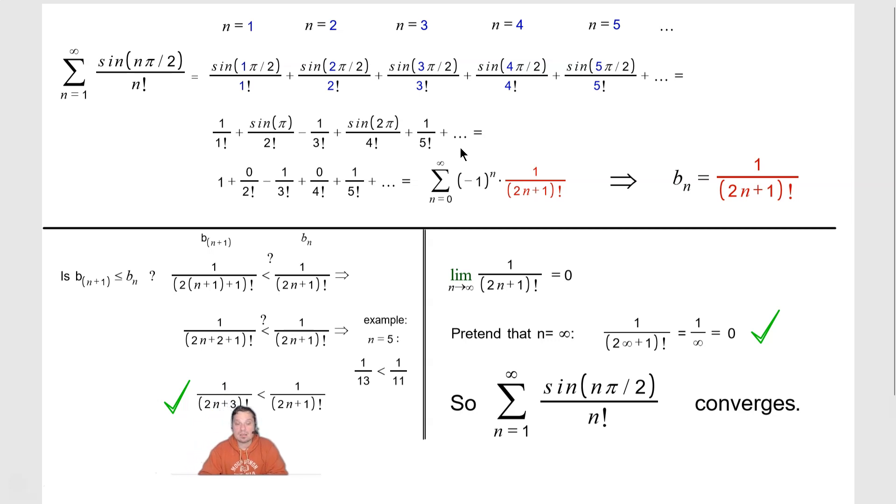And now on the right side, that's the b sub n column. So what I'm asking is, the whole time, is the left side less than or equal to the right side? That's why I have less than with the question mark present. So it becomes 1 over 2n plus 1 factorial the entire time. So now the question is, is this true right here? The answer is yes.